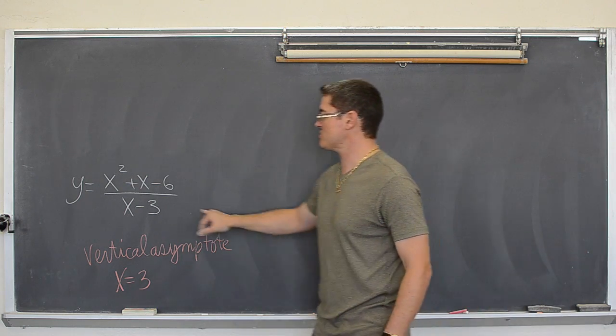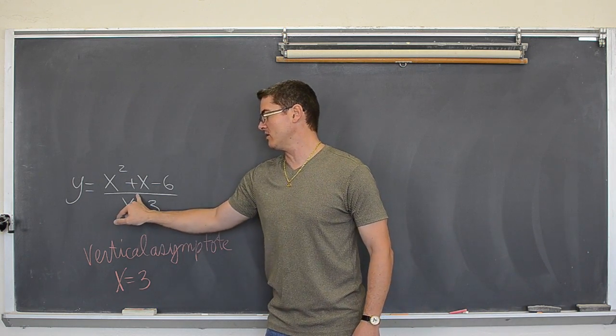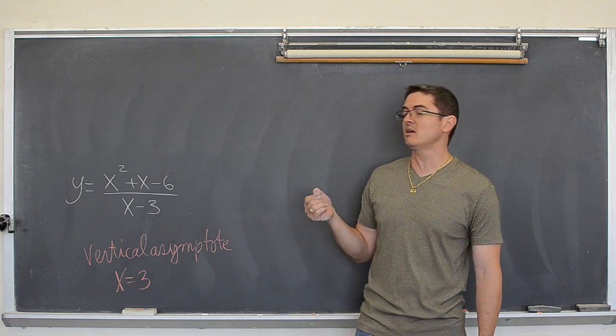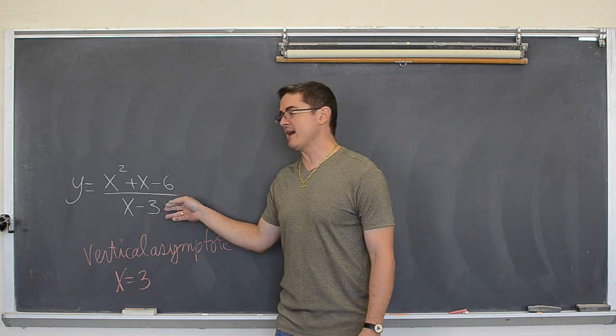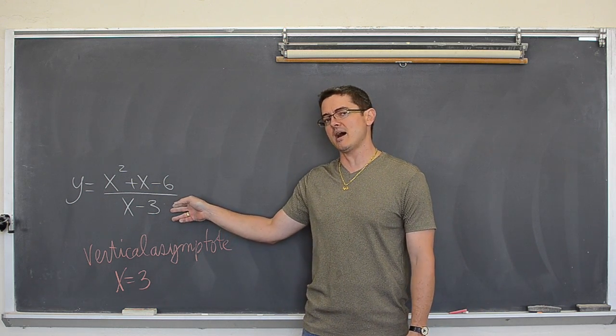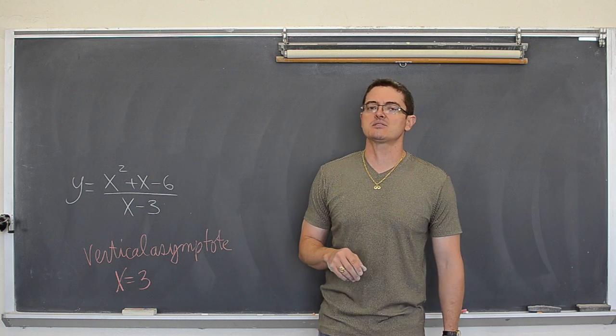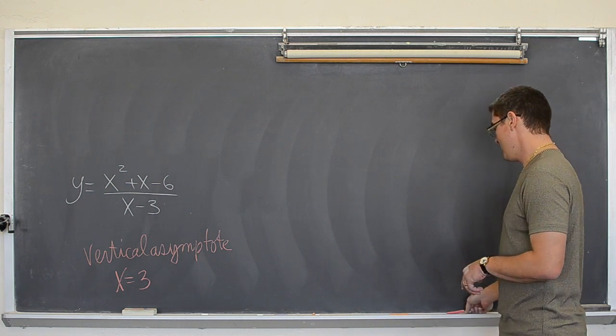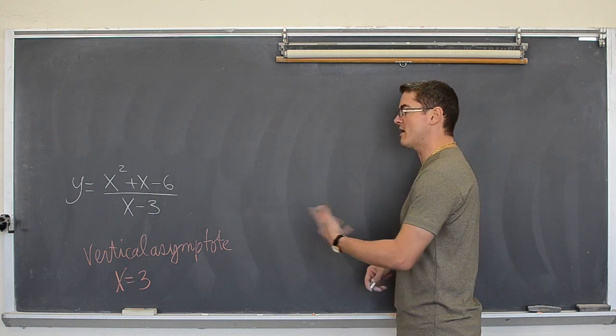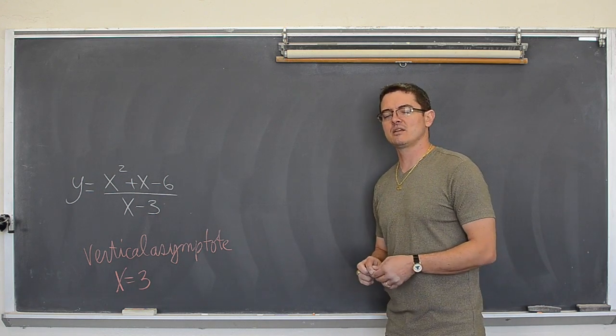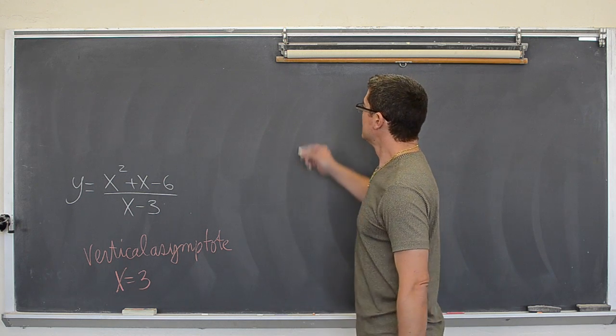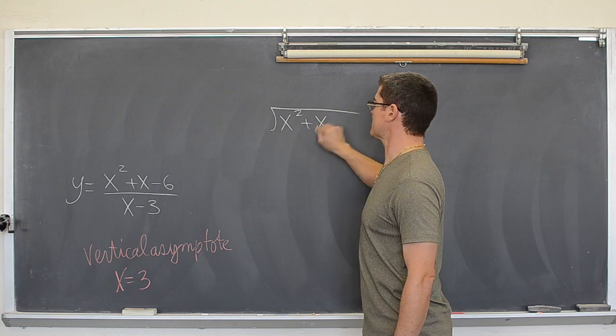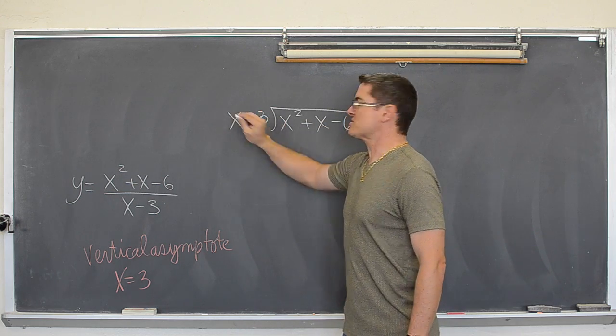Now because we are dividing by a binomial with the degree of one, you can also shortcut this one by doing synthetic division. But very often with rational functions you have something a little bit more complicated on the bottom. So fairly good chance that you might be doing long division instead of synthetic division. So I am going to show that instead. Plus students are more comfortable generally with synthetic division. So why not review something that kids might struggle a little bit more with. So we have got x squared plus x minus six divided by x minus three.